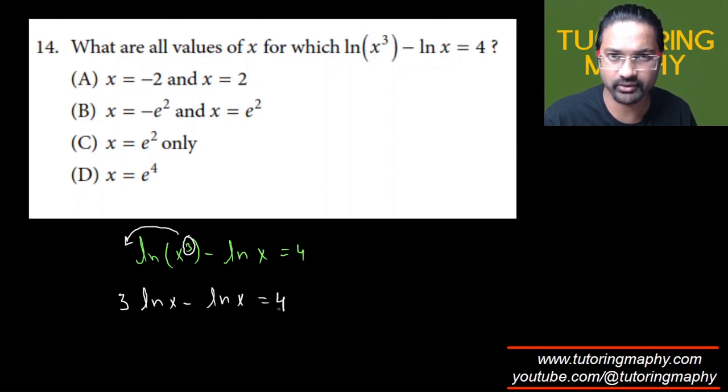3 ln x minus ln x is 2 ln of x, that is equal to 4, which means that you're going to divide both sides by 2 so ln of x will just be 2.